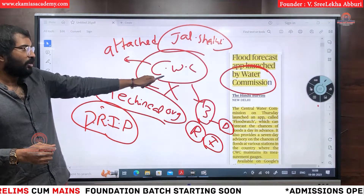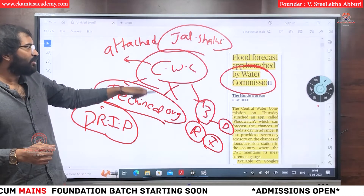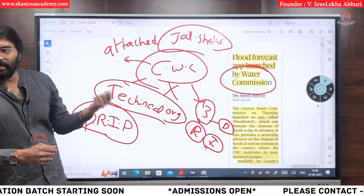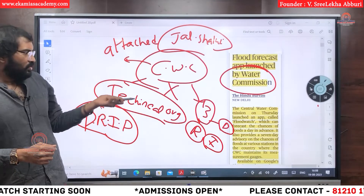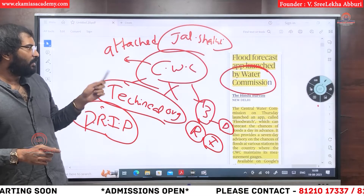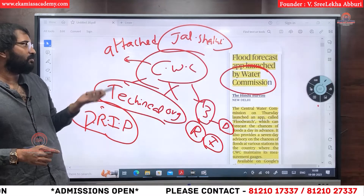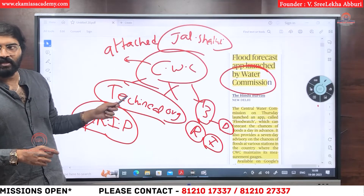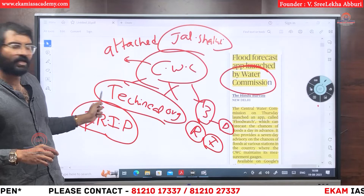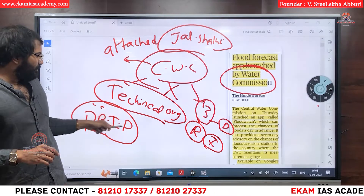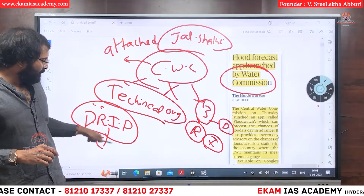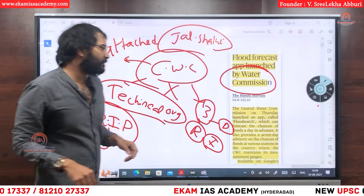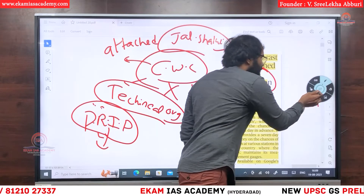Central Water Commission, because it deals with the technical aspects of water, such as dams. To summarize: CWC is not a statutory body, it is an attached office under the Ministry of Jal Shakti, it has three wings, it is a technical organization, and it assists in the DRIP program, which is supported by the World Bank.